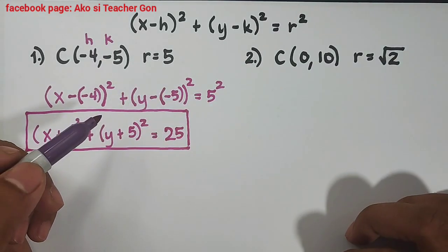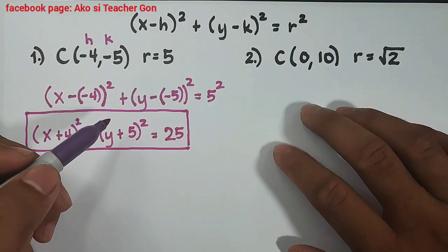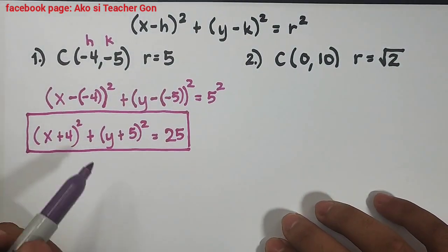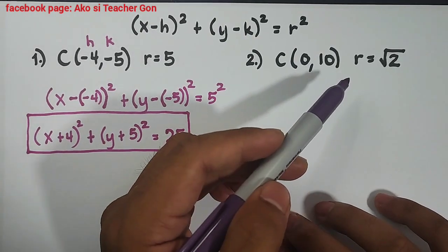Let's continue with item number 2. For number 2 we are given here the center (0, 10) and the radius is square root of 2.